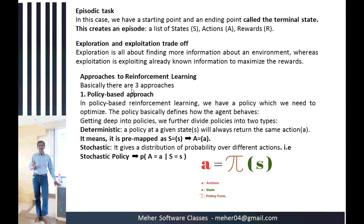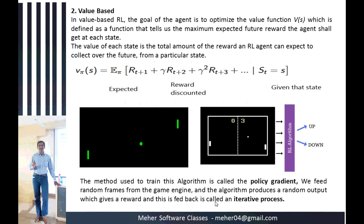The approaches of reinforcement learning are: policy-based approach, value-based approach, and model-based approach. In the policy-based approach, there are two types: deterministic and stochastic. A deterministic policy given a state will always return the same action — it is pre-mapped as a(s) = action. A stochastic policy gives a probability distribution over different actions: π(a|s), where a equals action, s equals state, and π equals the policy function.